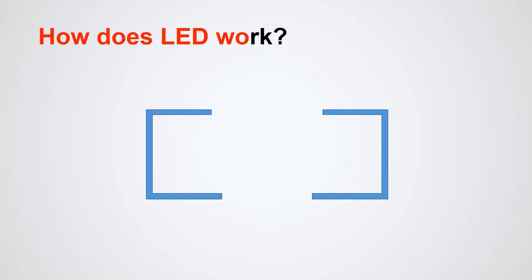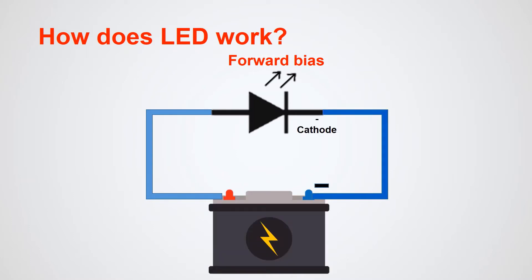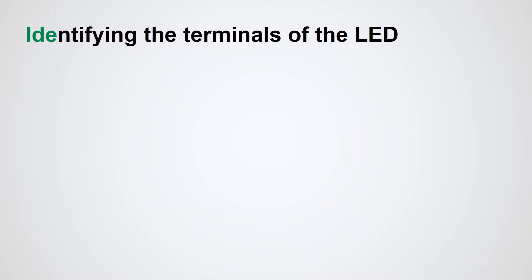How does an LED work? An LED emits light when it is in forward bias condition. To forward bias an LED, you just need to connect its cathode terminal to the negative side of an external bias voltage and its anode terminal to the positive side of the external bias voltage.